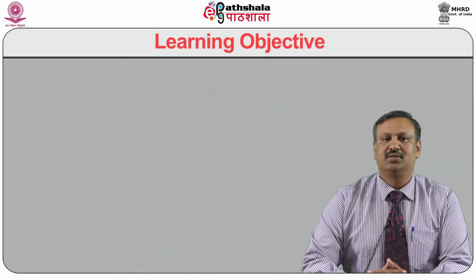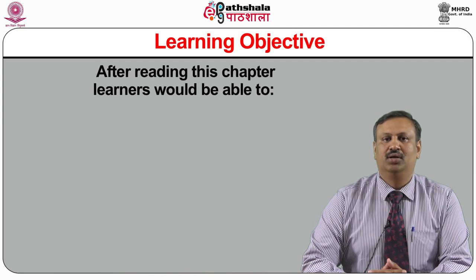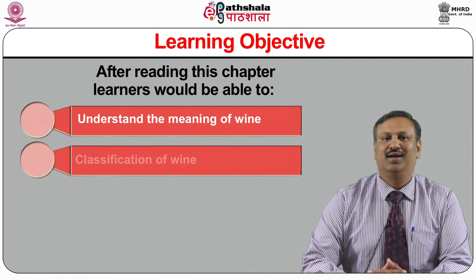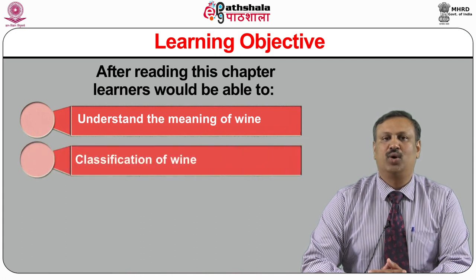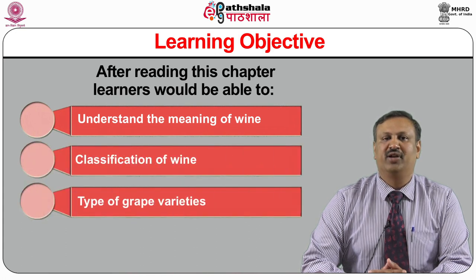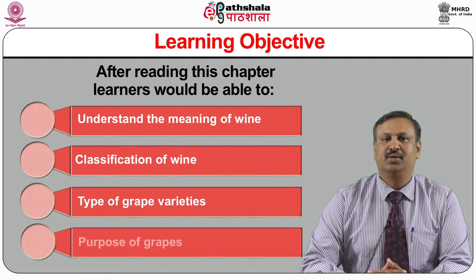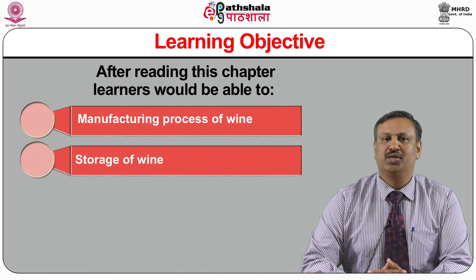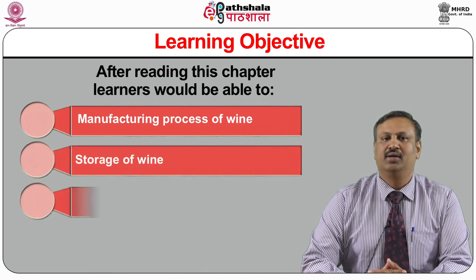After completing this module, the learners would be able to understand the meaning of wine, classification of wine, type of grape varieties, purpose of grapes, manufacturing process of wine, storage of wine, and serving temperatures of wine.